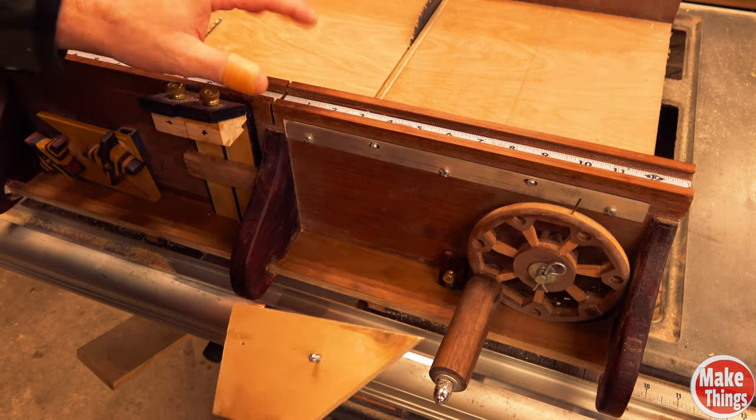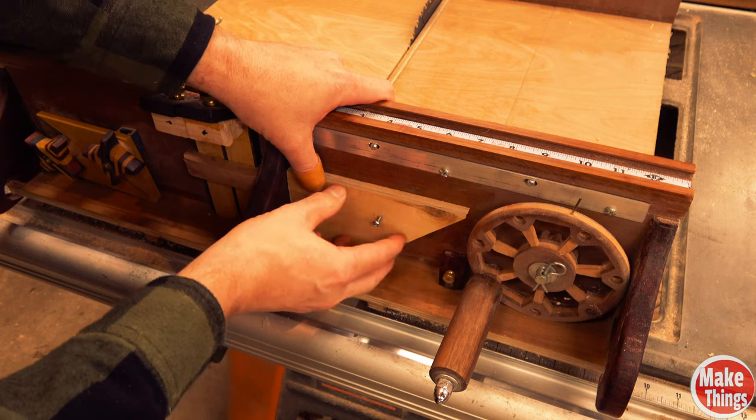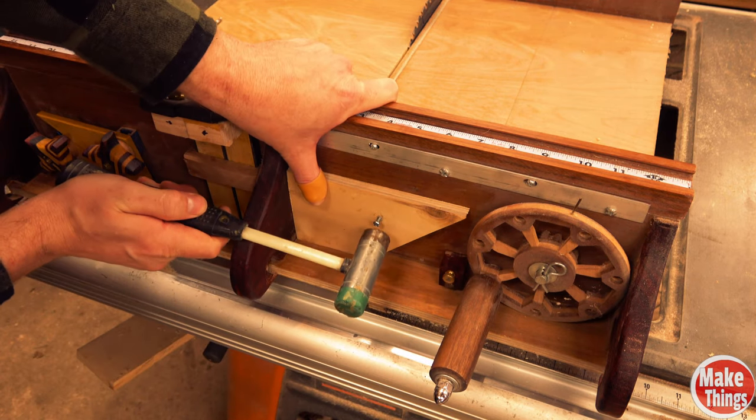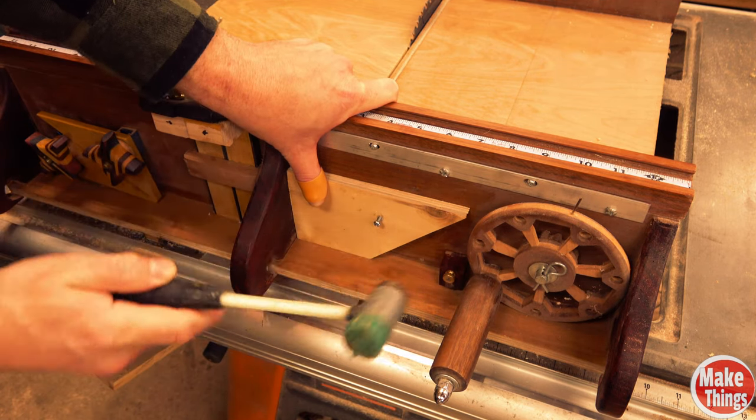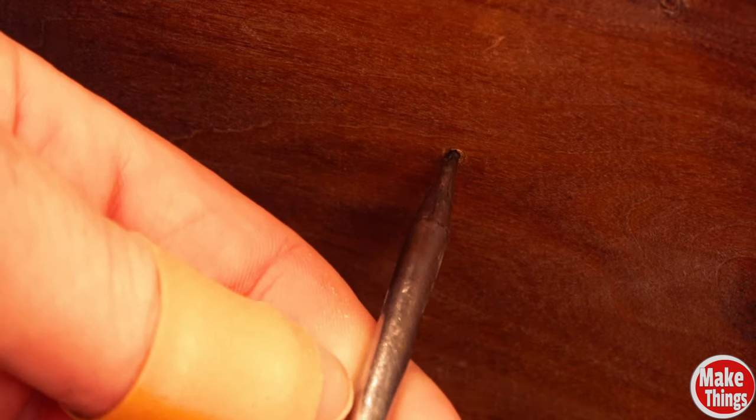Because my sled pretty much has all my jigs and everything on it, I'm going to go ahead and stick it on here. I'll take a hammer, I'm going to hit that bolt just enough that it leaves a mark. Find the center with an awl.